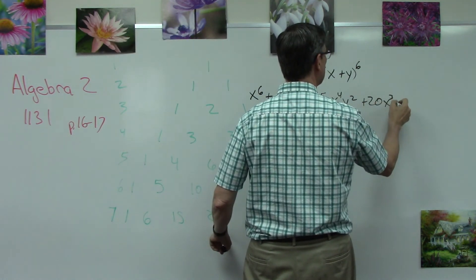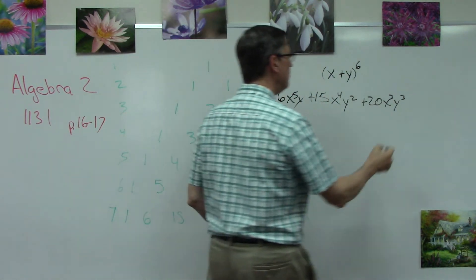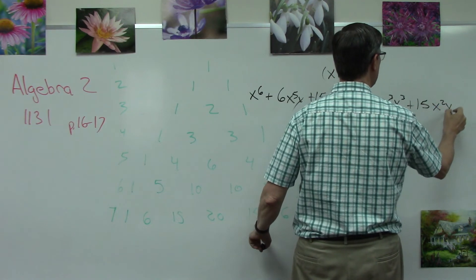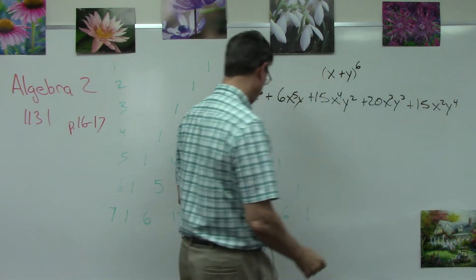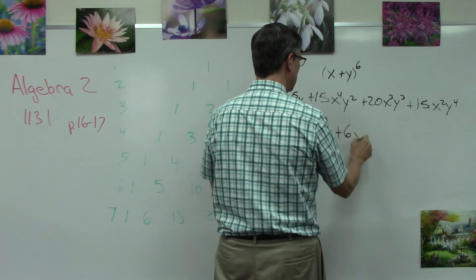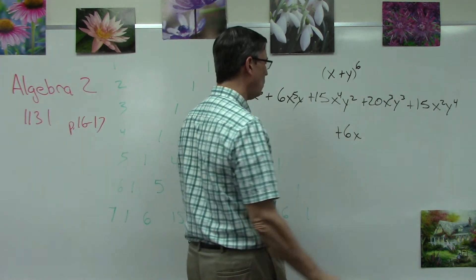Plus 20x to the third y to the third, then we go back to 15x squared y to the fourth. I do have to wrap it down here. Plus 6x to the one y to the fifth. The exponent on x is decreasing, so the y is increasing.